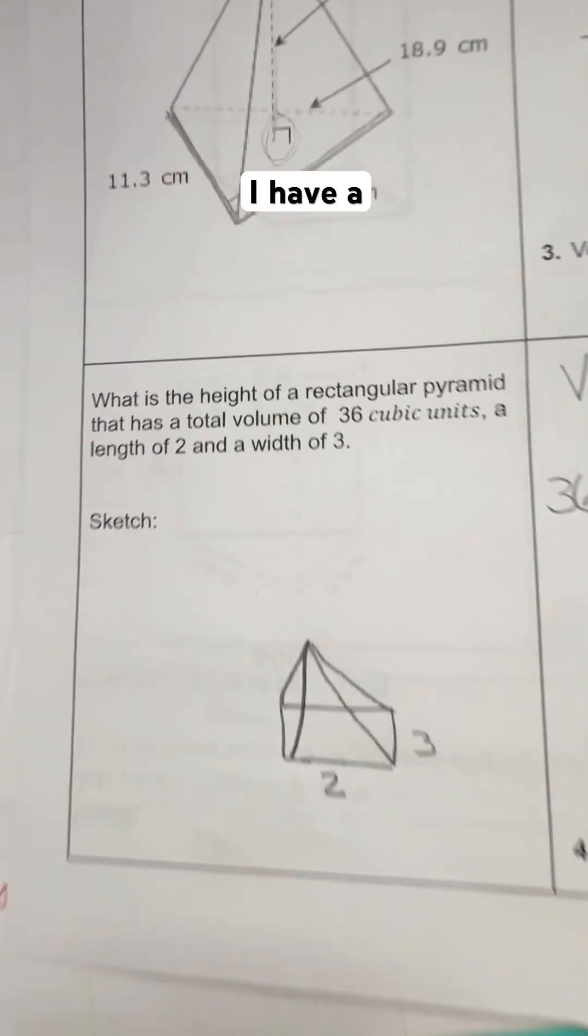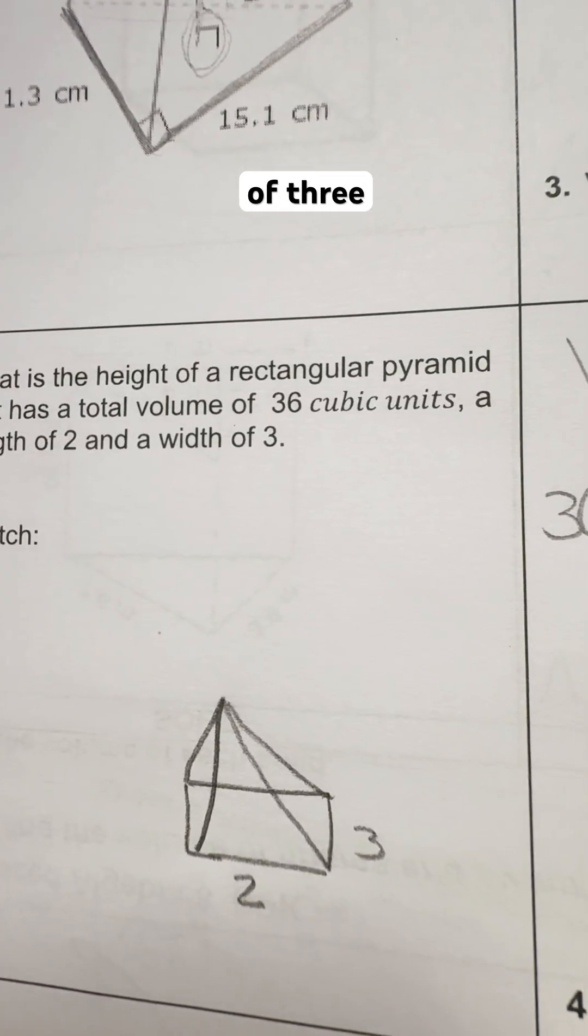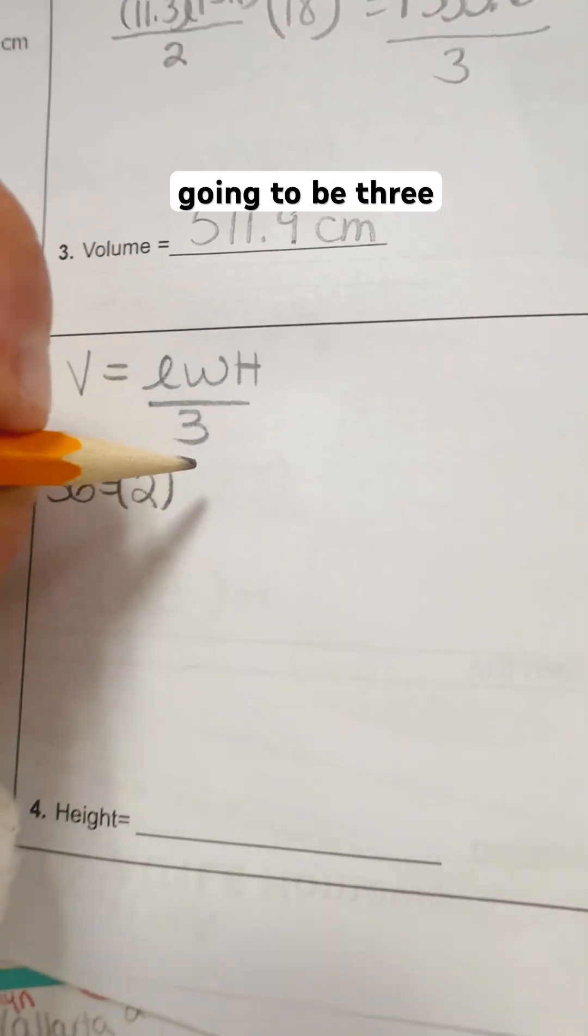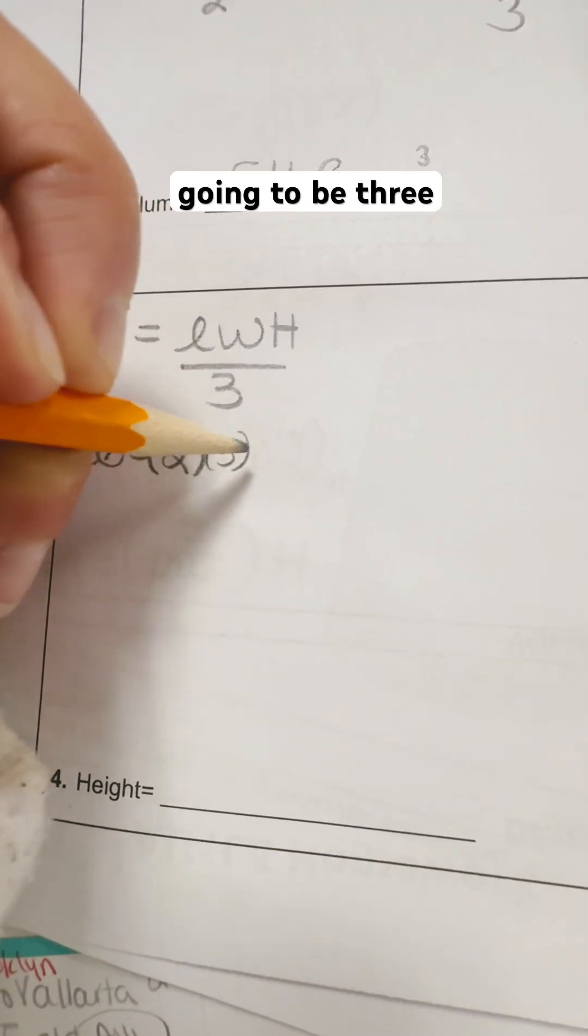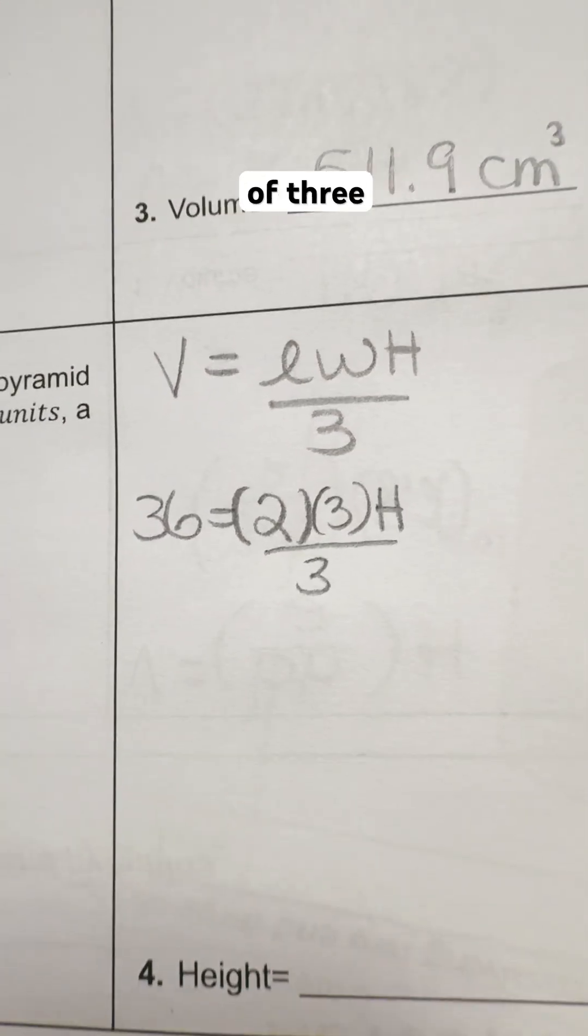I'm told that I have a length of 2, so L is going to be 2. And then I'm told I have a width of 3, so W is going to be 3. We don't know H, and we know the divided by 3 part. So everything is there except for H.